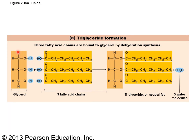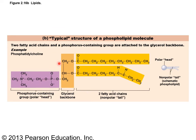A triglyceride has a three-carbon glycerol molecule with three long fatty acid chains. You remove three molecules of water to put a triglyceride together. A phospholipid has glycerol, two fatty acid chains, and a polar phosphate group on the other end. The phosphate head is polar and the fatty acid tails are non-polar (no charge). The abbreviated structure is drawn as a little ball with two tails.